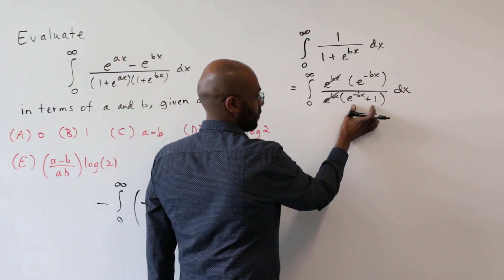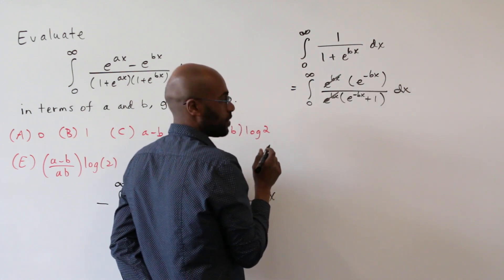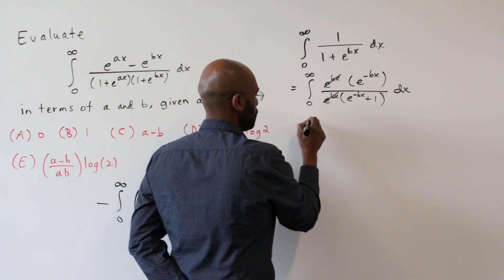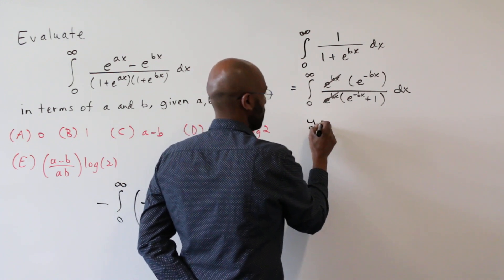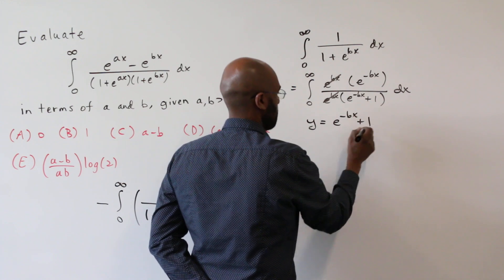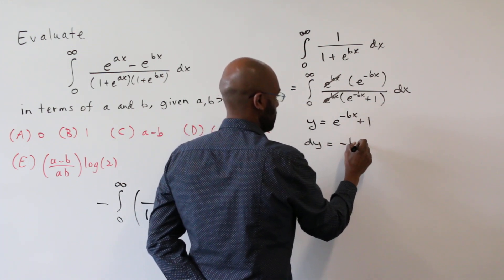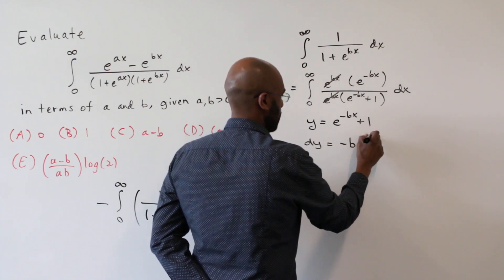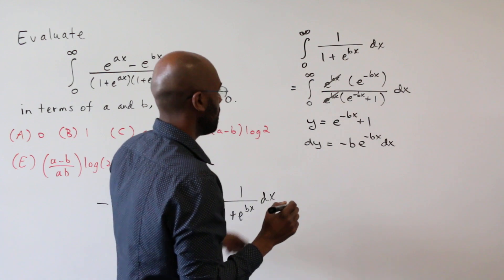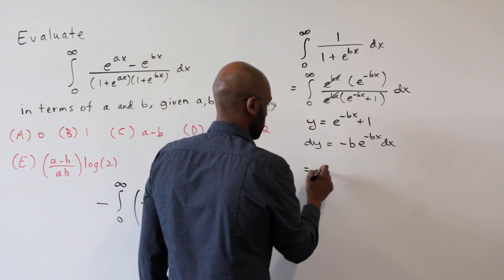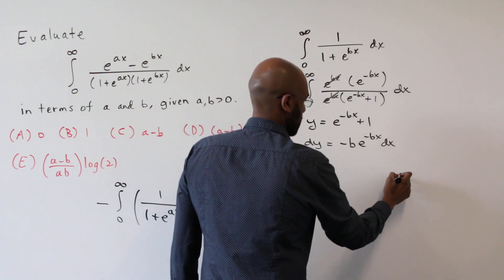You notice that the derivative of the bottom is a constant multiple times the thing on the top. So if you make a substitution letting, I guess I used u before, so maybe I'll let y be e to the negative bx plus one. Then dy is negative b e to the negative bx dx. And so this integral becomes the integral from, we'll leave the bounds as they are for now...